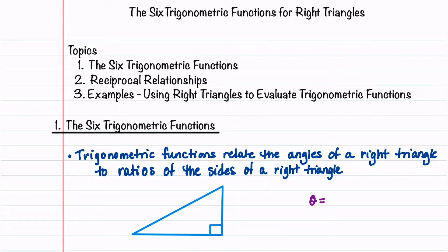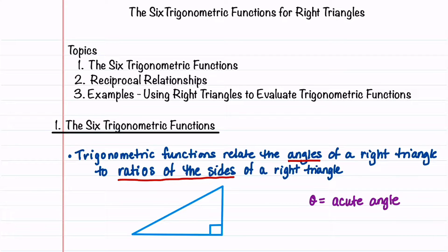There are six trigonometric functions that relate the angles of a right triangle to the ratios of the sides of the right triangle. We'll begin by assigning theta to be an acute angle in our right triangle. Let's label the sides: the side closest to theta is called the adjacent side, the side opposite theta is called the opposite side, and then we can label the last one as the hypotenuse.